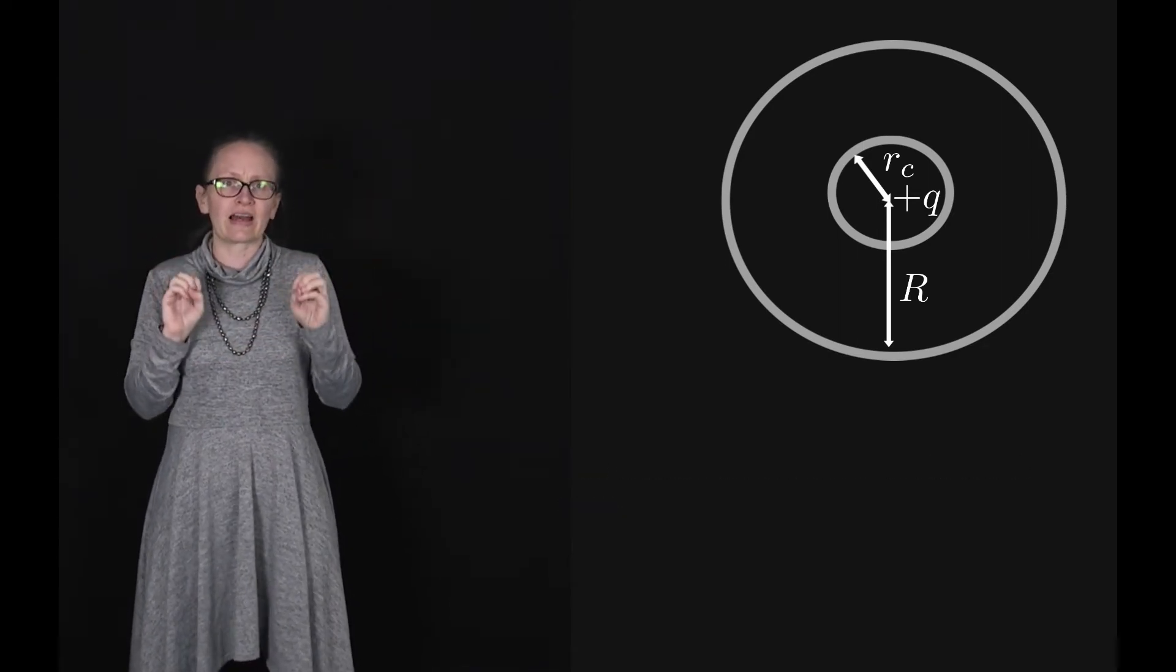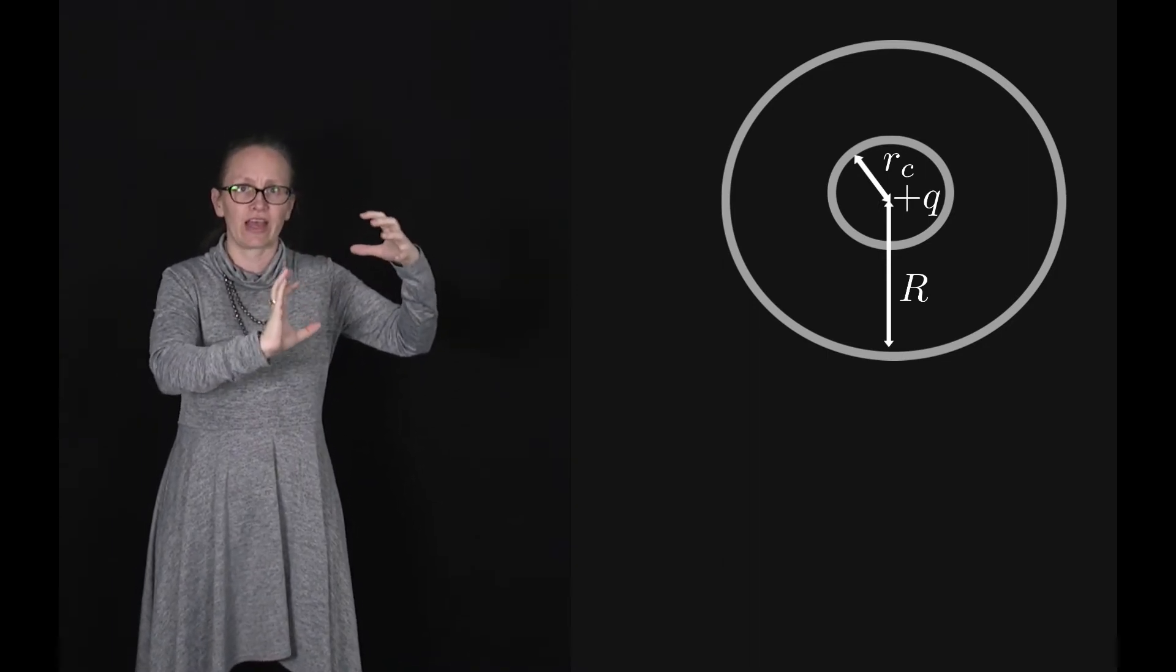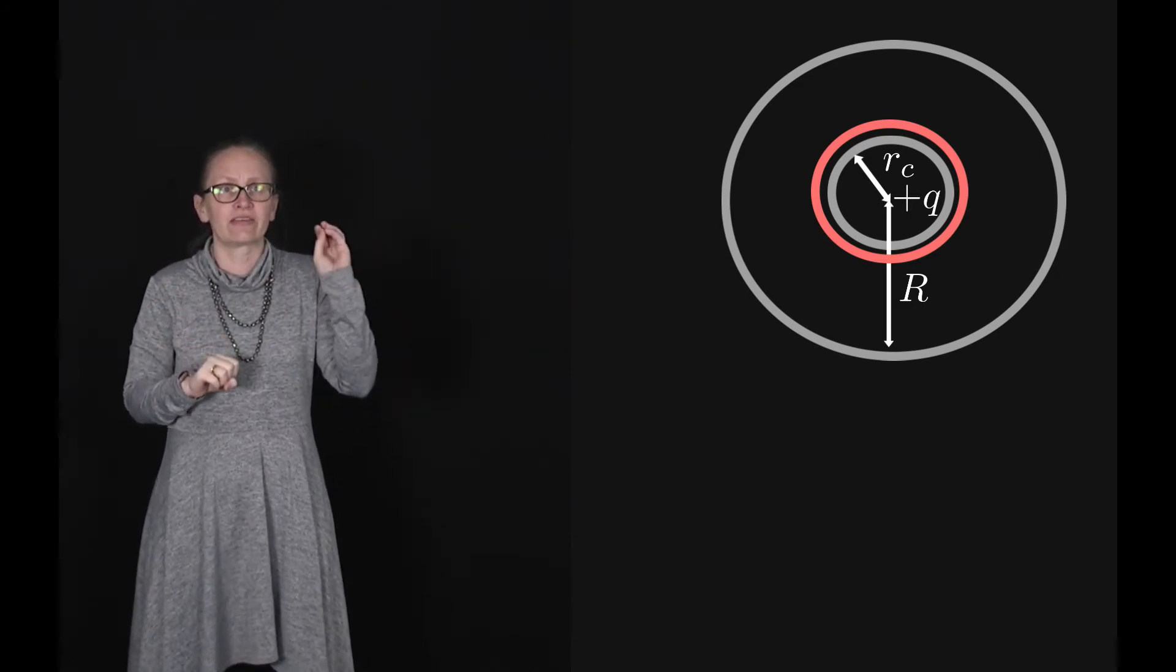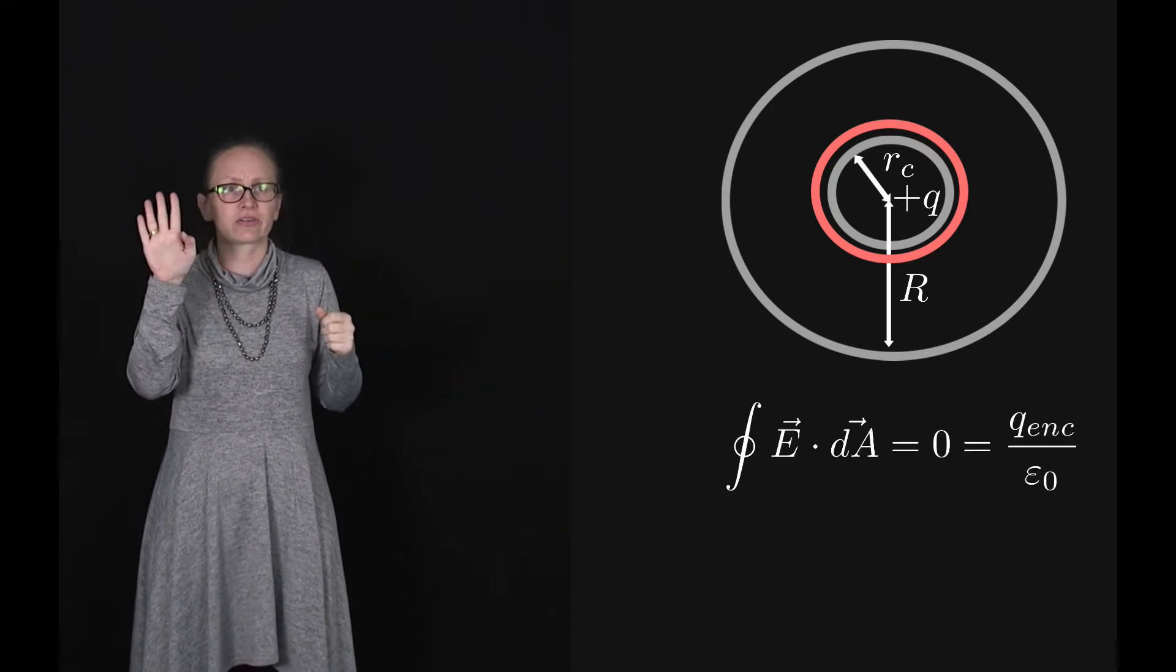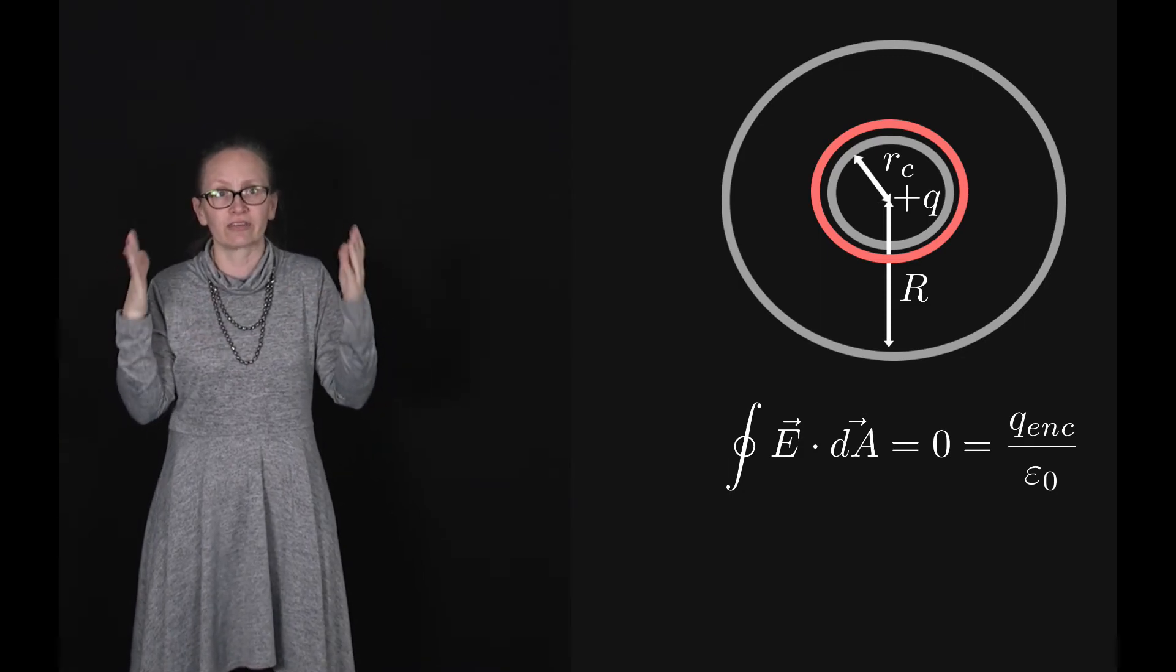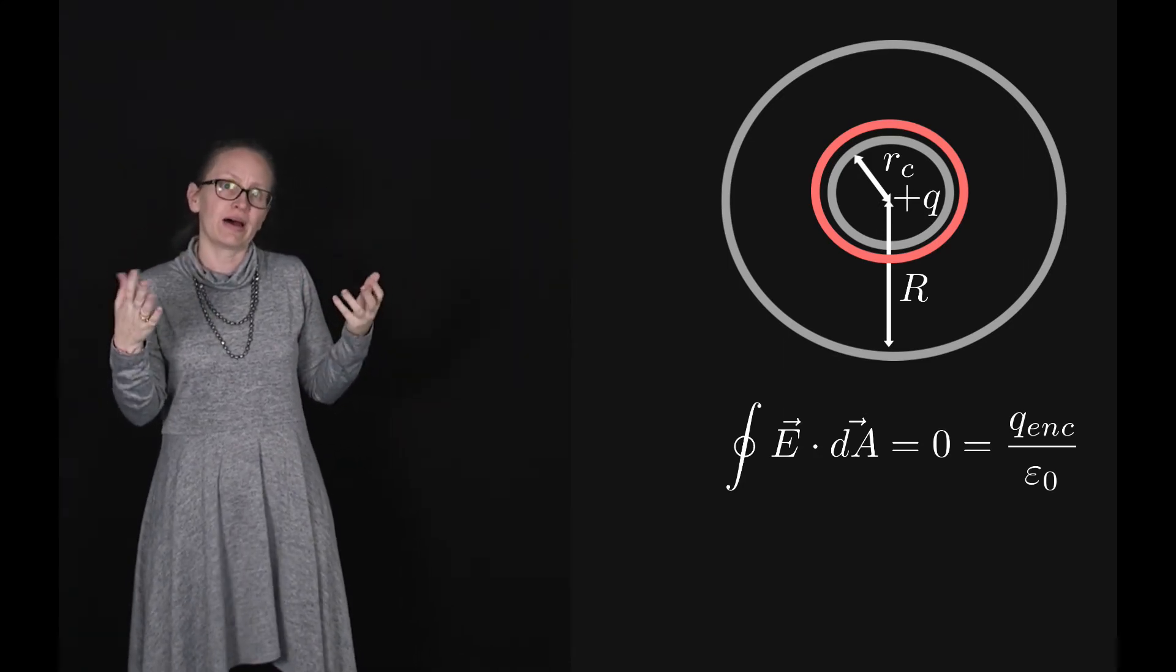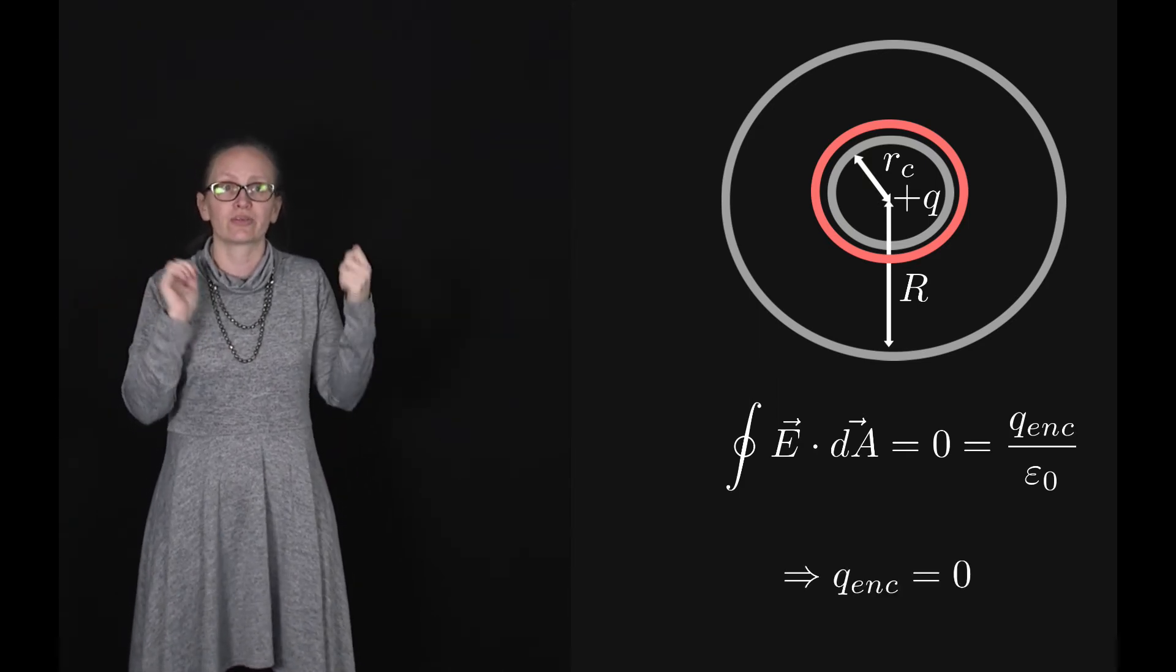Let's take a Gaussian surface which is just outside the radius of the cavity, so it's inside the conductor. Because it's inside the conductor we know that there is zero electric field there. Gauss's law tells us that the integral of E dot dA is equal to zero because the electric field is zero. And so zero equals Q enclosed over epsilon naught. Now epsilon naught is a number, it's not equal to infinity. So this tells us that the enclosed charge must be zero.